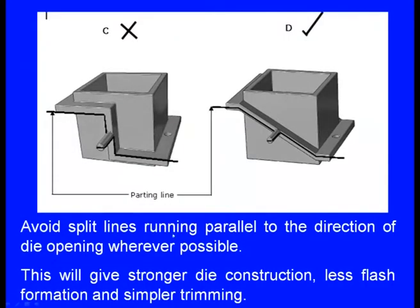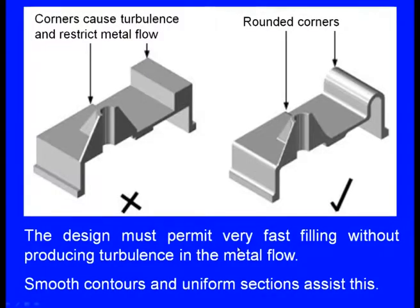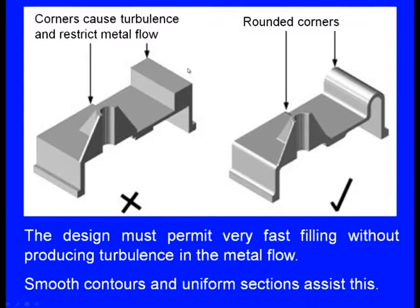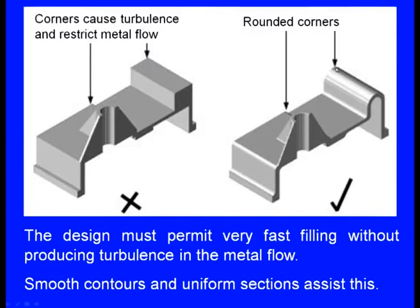Avoid split lines running parallel to the direction of die opening wherever possible — this gives stronger die construction, less flash formation, and simpler trimming. The design must also permit very fast filling without producing turbulence in the metal flow. Smooth contours and uniform sections assist this. Sharp corners cause turbulence and restrict metal flow; rounding the corners minimizes turbulence and enables easy filling of the molten metal.